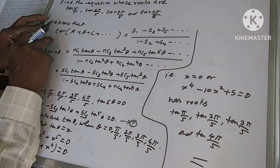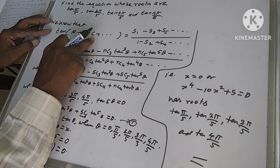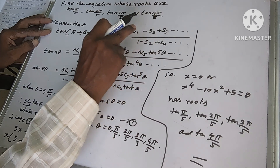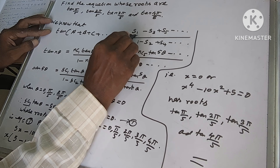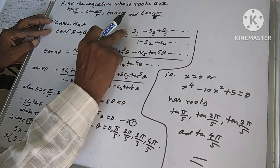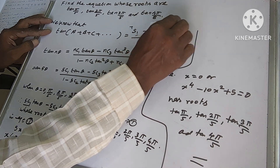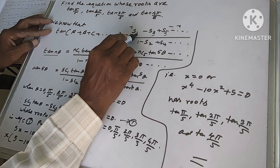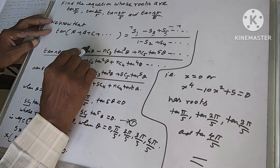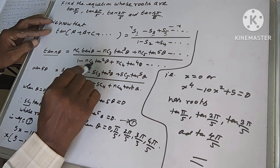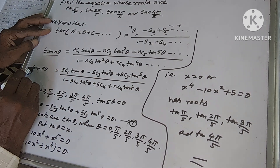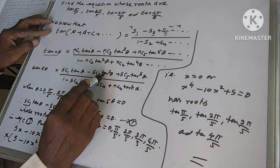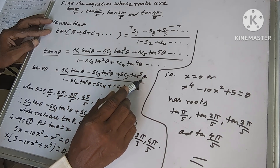Here is the formula: tan(A + B + C) equals S1 minus S3 plus S5, divided by 1 minus S2 plus S4. In the numerator, the suffix numbers are 1, 3, 5 and signs are alternating — plus, minus, plus, minus. Similarly for tan(nθ), with powers 1, 3, 5 in numerator and 2, 4 in denominator. With N replaced by 5: 5C1·tan θ minus 5C3·tan³θ plus 5C5·tan⁵θ, divided by the denominator.